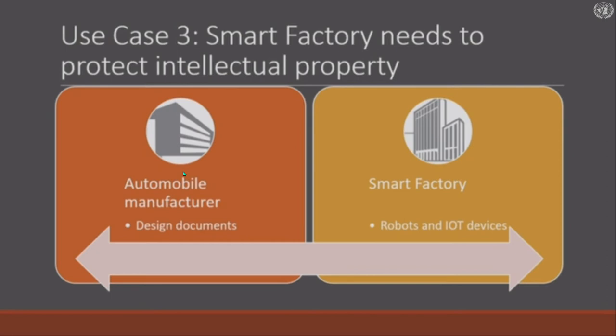Use case three: smart factories that need to protect intellectual property. An automobile manufacturer has design documents that need to be sent to their IoT robots in the factory, and they don't want anybody to steal the car designs. So how do you solve all this if the current cryptography can be broken?